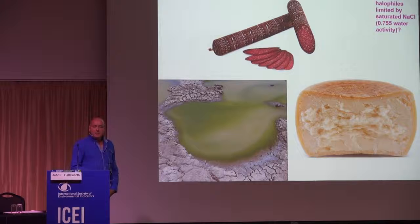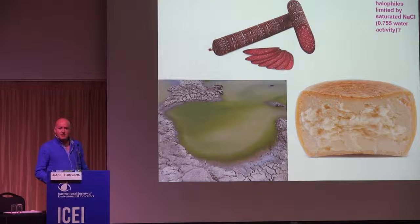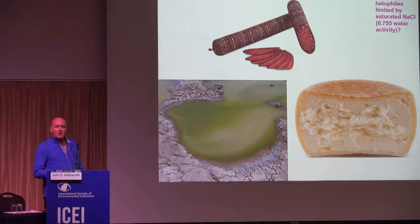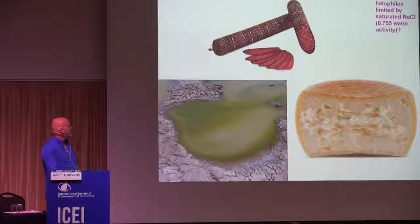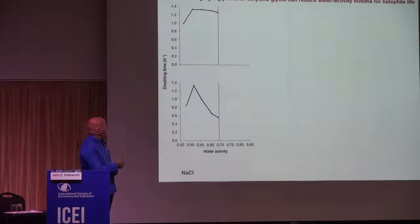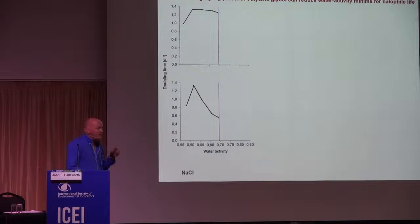We went on to look at halophile systems. Here you have halophiles in 5M sodium chloride in a natural environment — cheese and salami represent a thermodynamically equivalent environment. The water activity of saturated sodium chloride is 0.755. Halophilic bacteria and archaea, for the past 100 years, have always been assumed to have a growth limit of 0.755, because you can't get any lower — that's the saturation limit of NaCl. But when you look at the growth curves of some extreme xerophiles, at 0.755 — indicated by the pink line, equivalent to saturated NaCl — they're still growing quite happily, some of them close to optimum, and you get a feeling from the growth kinetics that they're capable of proliferating at much lower water activities.